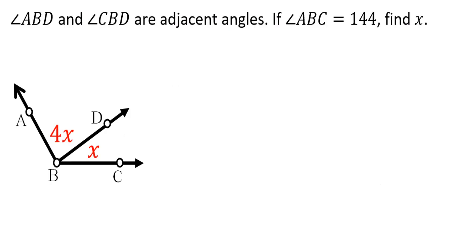Let's have an example. Angle ABC and angle CBD are adjacent angles. If angle ABC is equal to 144, find X. So ito buong angle na ito is 144 degrees. And itong angle ABD is 4X, and itong angle DBC is X. So pag pinag-add mo itong measurement ng dalawang ito, that is equal to 144. So that is 4X plus X is equal to 144.